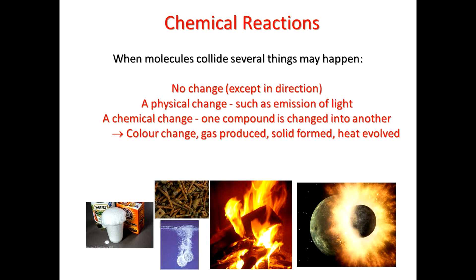Examples of a gas being produced could be the elephant's toothpaste reaction between baking soda and vinegar, or more importantly, the reaction that happens in an airbag, where lots of nitrogen gas is formed very, very quickly — enough to inflate the bag before your head impacts the steering wheel. Heat formed could be those heat pads where you click a little metal inside a gel, causing a chemical reaction which gives out a lot of heat, used to warm your hands on a cold mountainside.